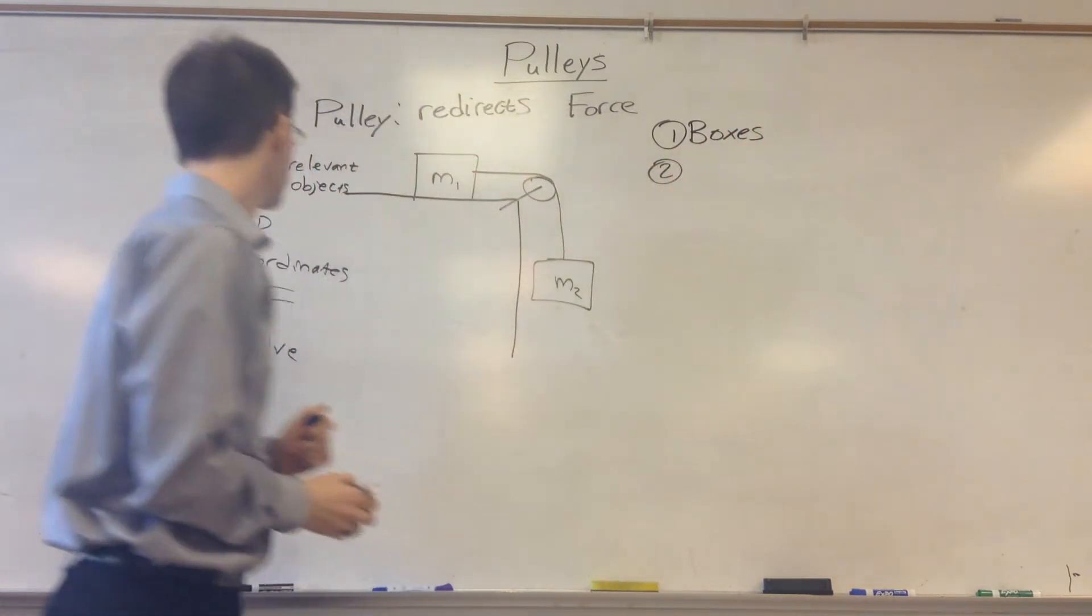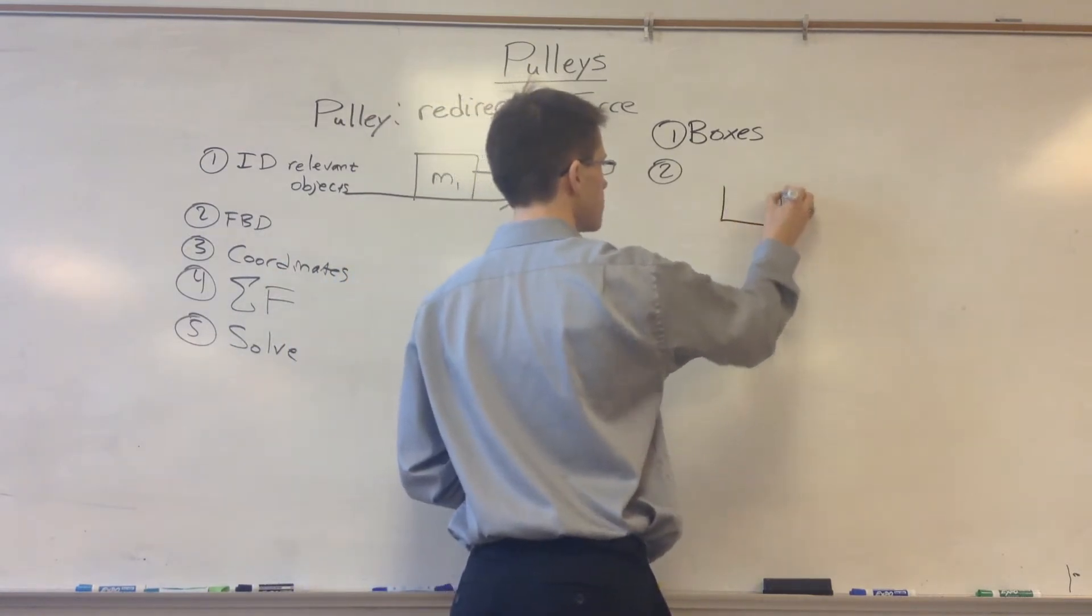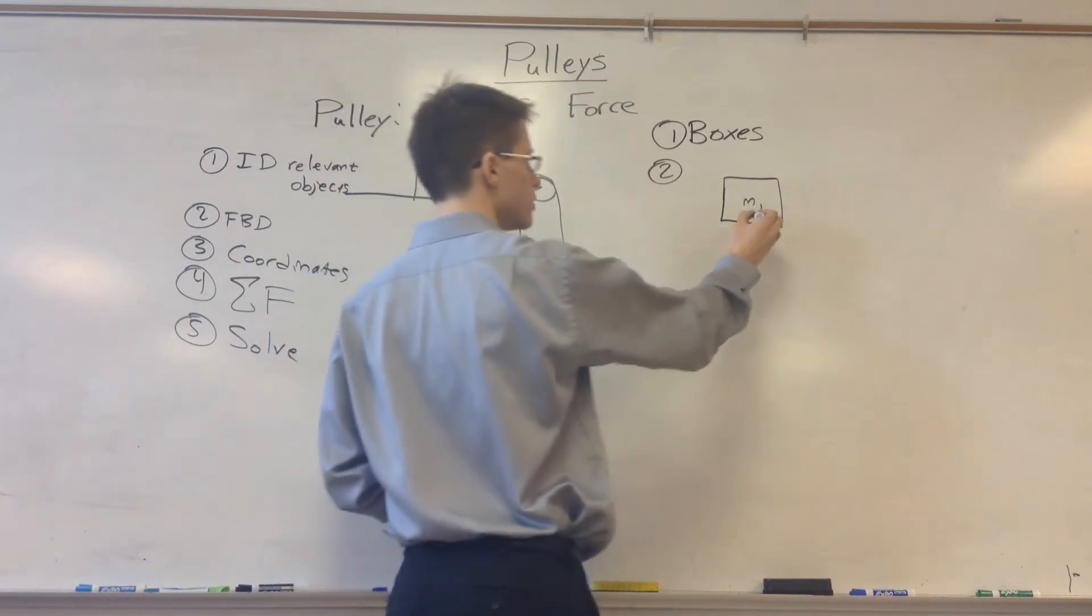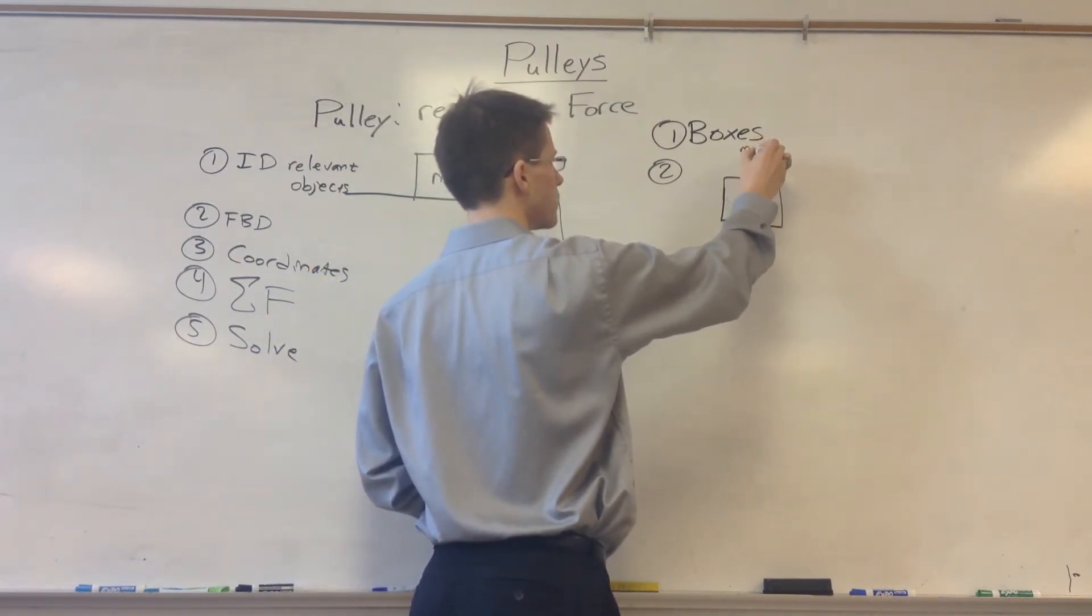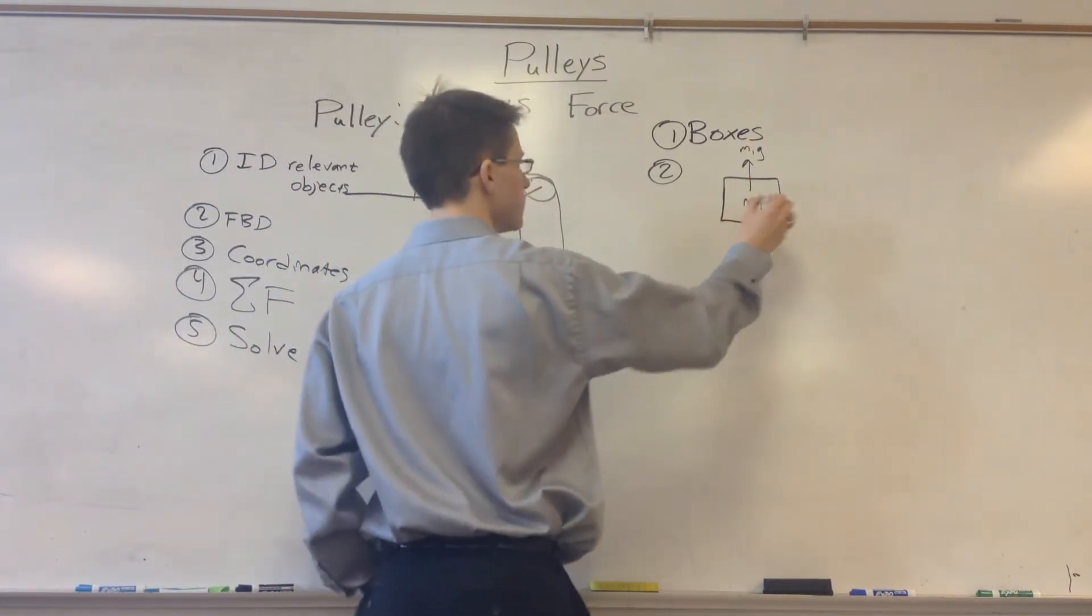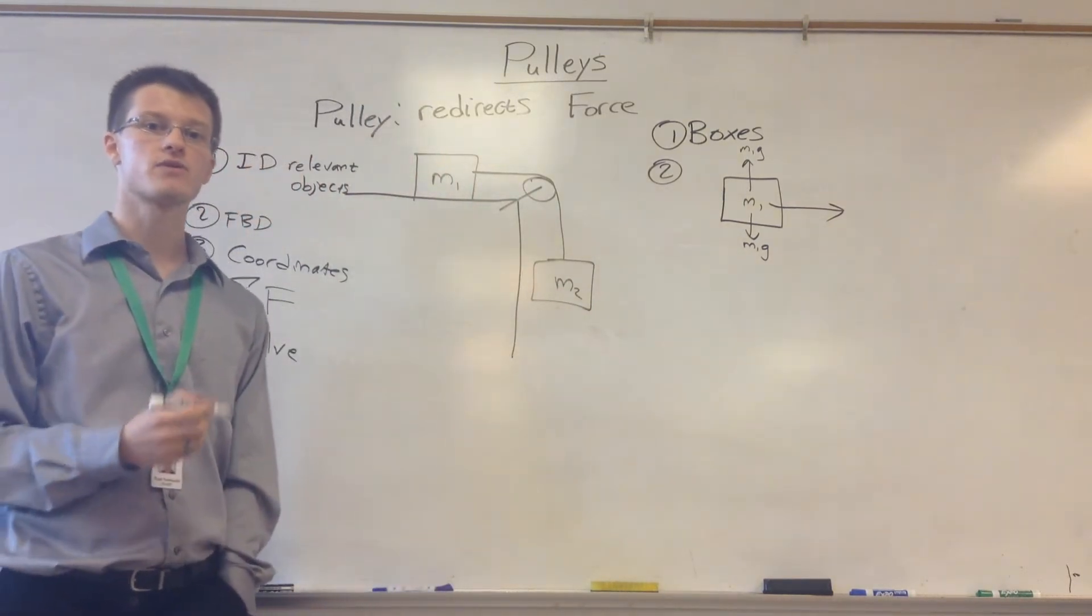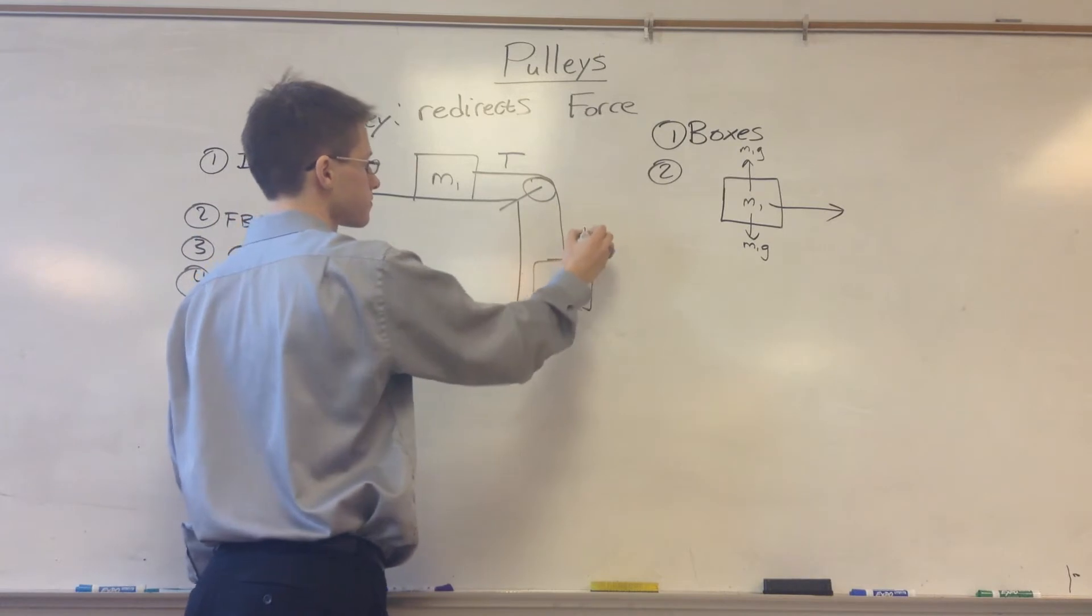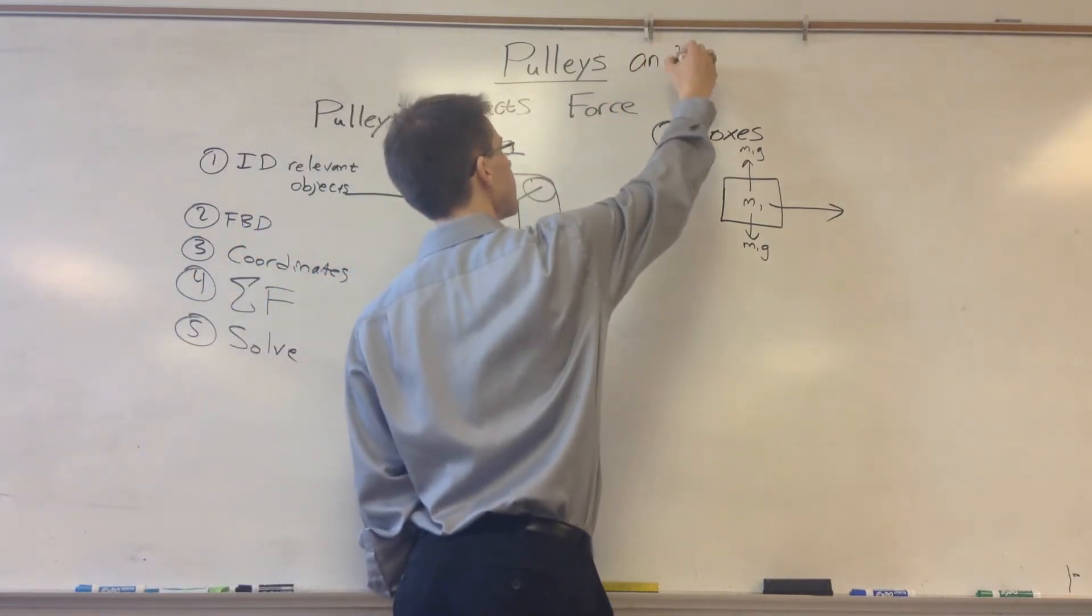Step two, we're going to draw our free-body diagram. For the block on top, M1, I have M1g down, which doesn't really matter because it's balanced by the normal force up, so it's not going to be moving up or down at all. But we do have a force to the right, a force from the rope. That force is called tension. Let's add that up here too—pulleys and tension.